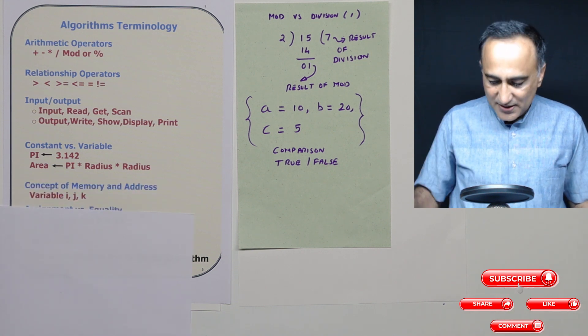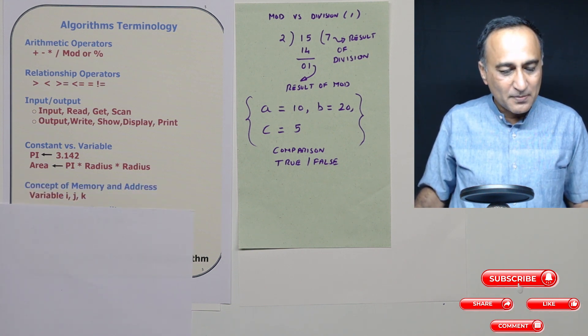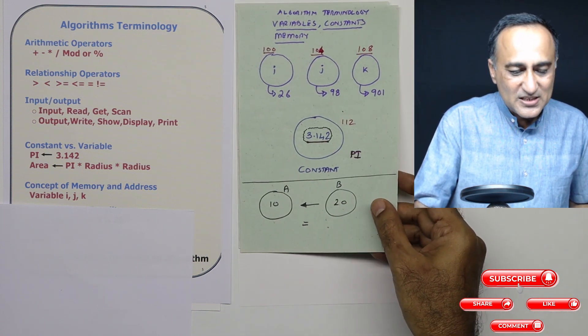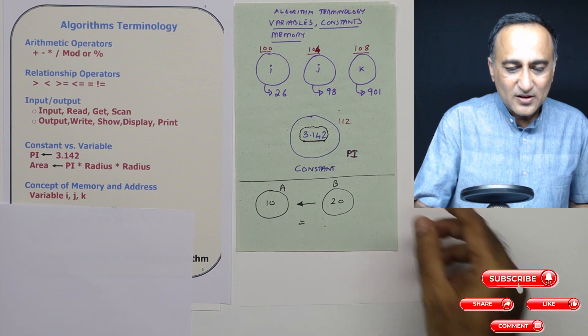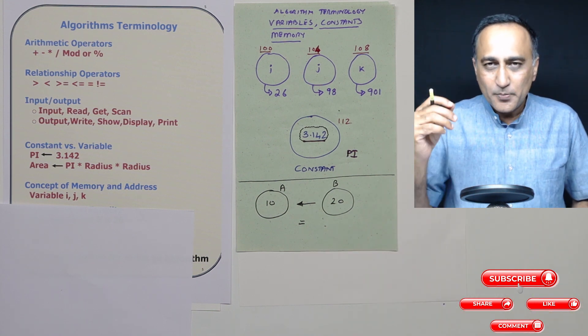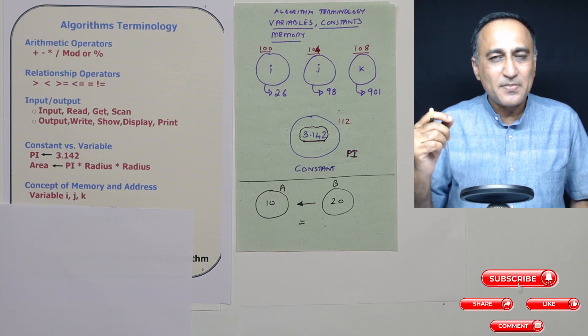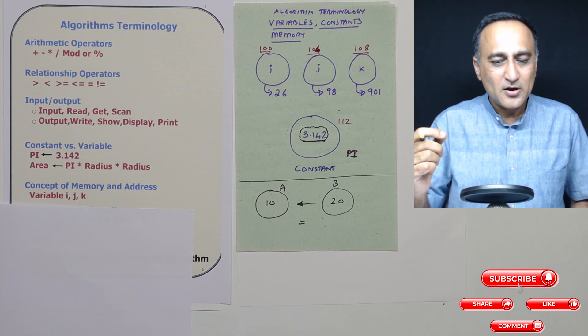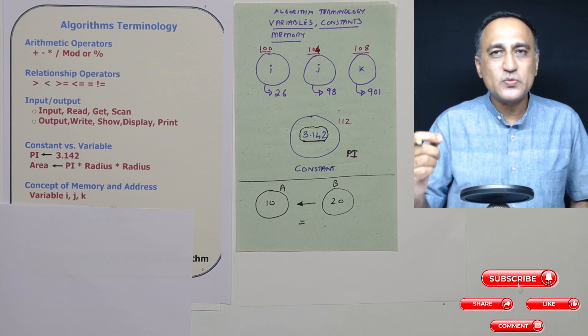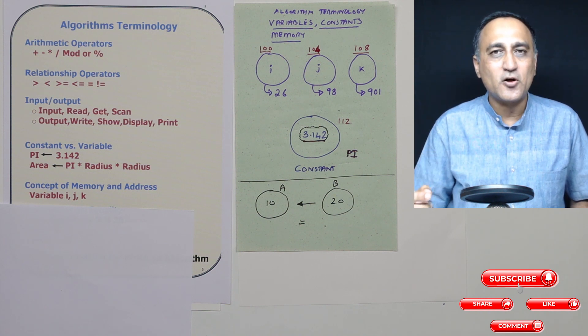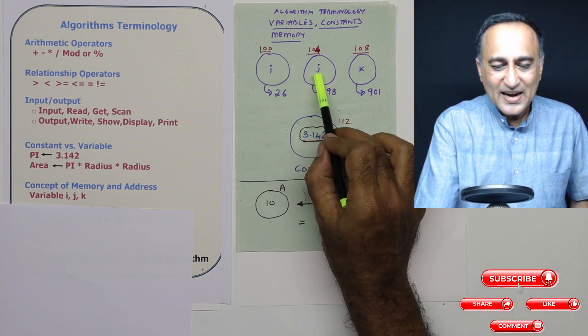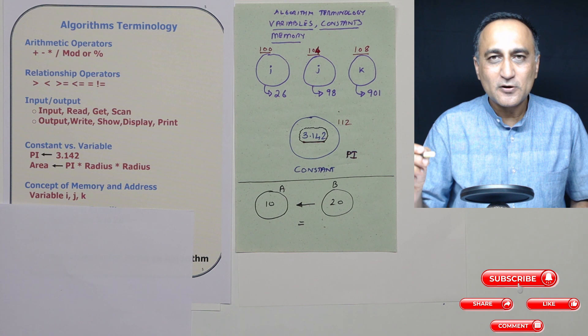Let's try to understand the concept of memory and address. If you look at A, B, C or I, J, K - these are all examples of variables. In computers, since everything is done in the main memory or RAM, we declare or assume that all variables we are operating or processing in an algorithm happen to be in the RAM. If you look at these, I, J, K happen to be the names of three variables. That means I can read in different values or change the values. For example, this is 26, this is 98, this is 901.